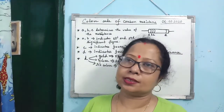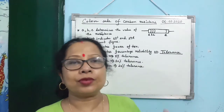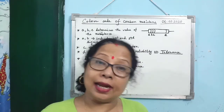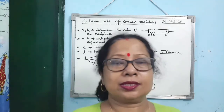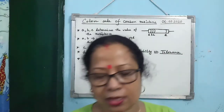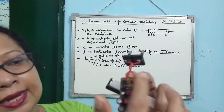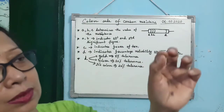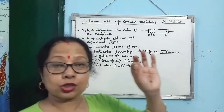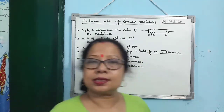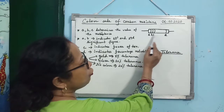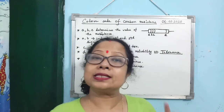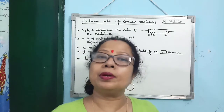Next is the color code of carbon resistances. Resistances used in physics labs are large coils, but in electronic circuits, resistances are generally carbon resistors — very small in size. On the body of a carbon resistor, there will be four colored rings. From these four colored rings, one can find out the value of the resistance offered by that particular carbon resistor.